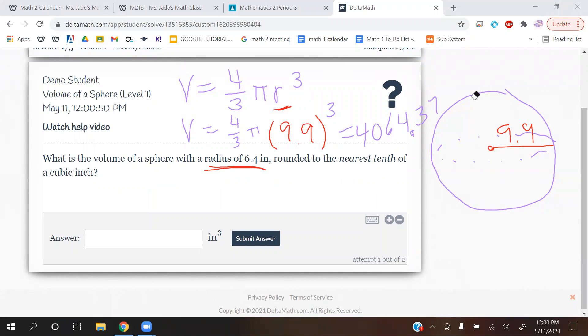So formula stays the same. I'm not going to rewrite it, but the radius changed simply because they gave us 6.4 this time. So we want the volume of a sphere with radius of 6.4 rounded to the nearest tenth of a cubic inch. So the formula is still 4 thirds pi r cubed. So we have 4 thirds pi r is now 6.4. And we're just going to keep that.